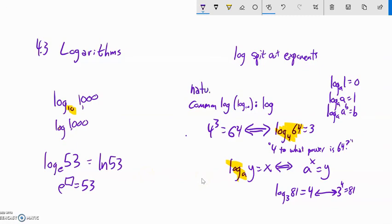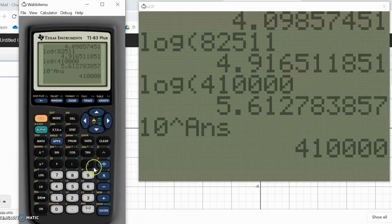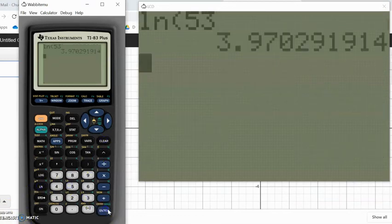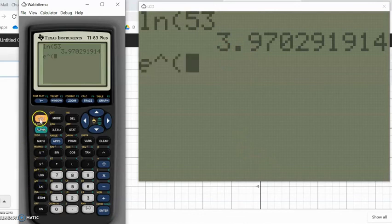So the natural log, log base e, will use the symbol ln, and that's on our calculator as well. So the natural log of 53 is about 3.97. Now notice what that means is if I take e to that power, see how e^x is lined up with natural log? You can tell they undo each other. So natural e to the power of my last answer, it'll give me my 53 back.